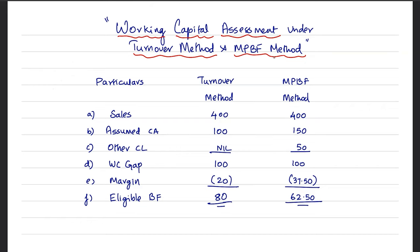The Turnover Method makes a general assumption with regard to current assets — it assumes current assets will be 25% of the estimated turnover. Whereas the MPBF Method recognizes that current assets can be a result of their cash cycle, their inventory management practices, or their collection period. So in the MPBF Method, there is no assumption with regard to current asset buildup. That's why the Turnover Method is suitable for small-scale units where the limit is capped up to 5 crore, and beyond that, MPBF is considered more relevant.